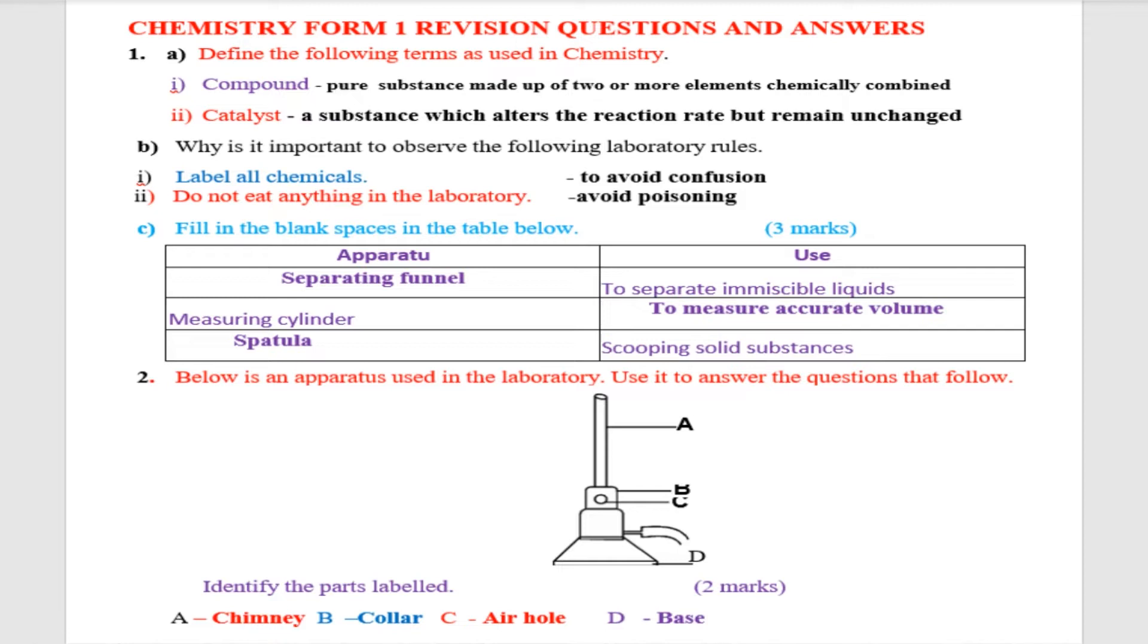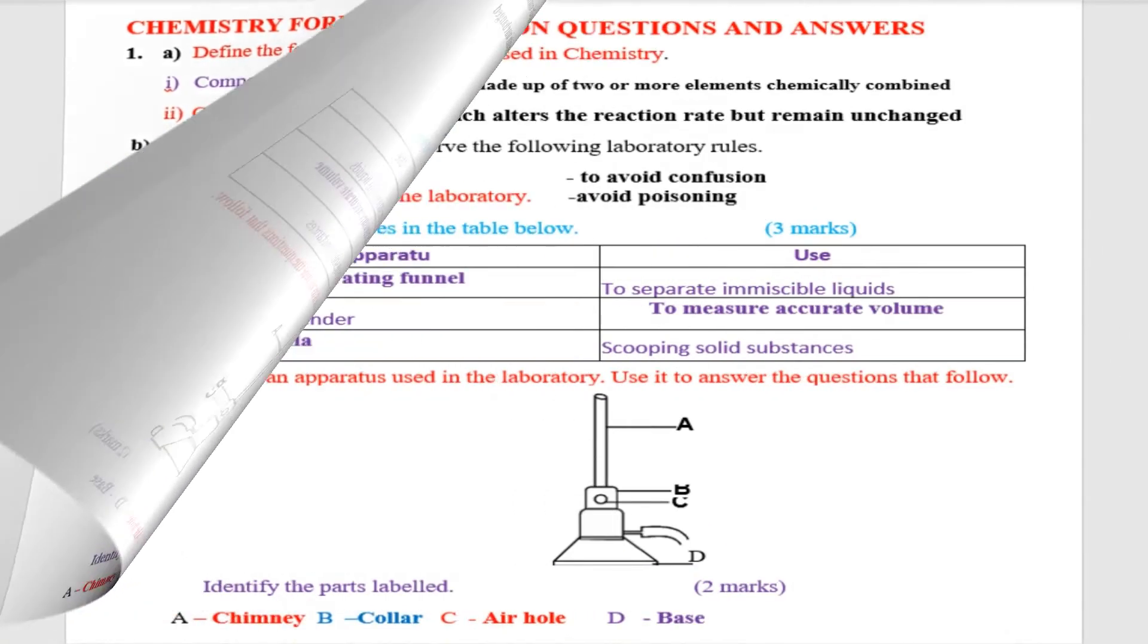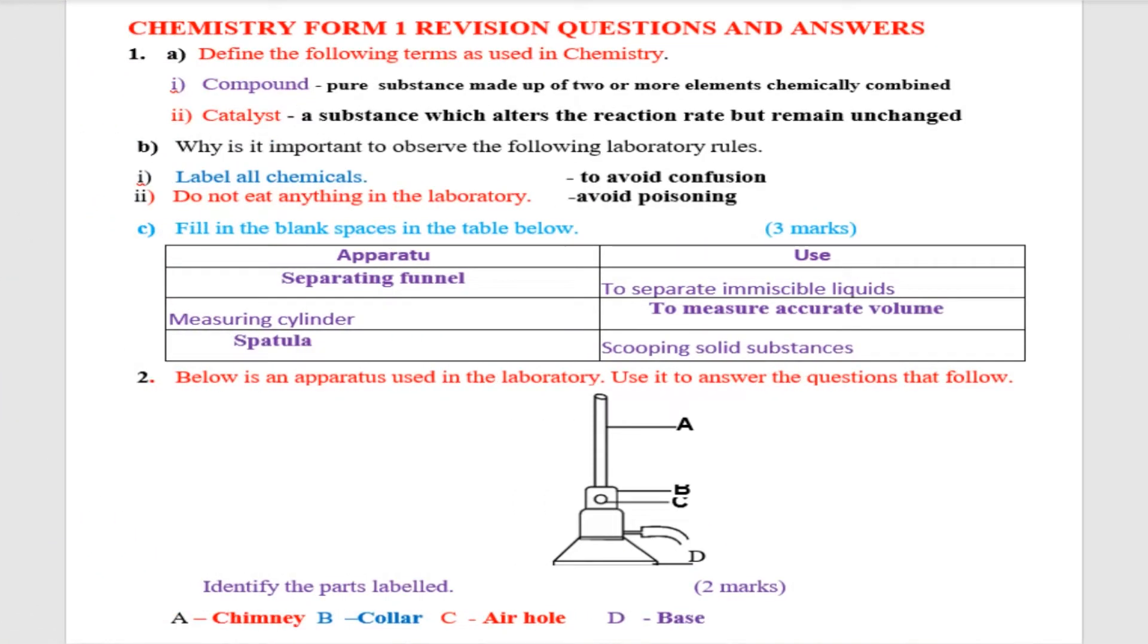Question C: fill blank spaces in the following table. We have apparatus and then we have the use. For you to be safe, you must know the apparatus in the laboratory and their use. We have separating funnel. What is the work of that? To separate immiscible liquid. Measuring cylinder, their work, the use of that is to measure accurate volume. And then spatula, spatula is used for scooping solid substances.